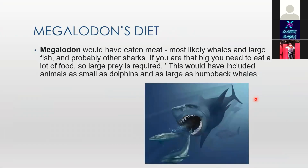Megalodon's diet: Megalodon would have eaten meat — most likely whales and large fish, and probably other sharks. If you are that big, you need to eat a lot of food, so large prey is required. This would have included animals as small as dolphins and as large as humpback whales.